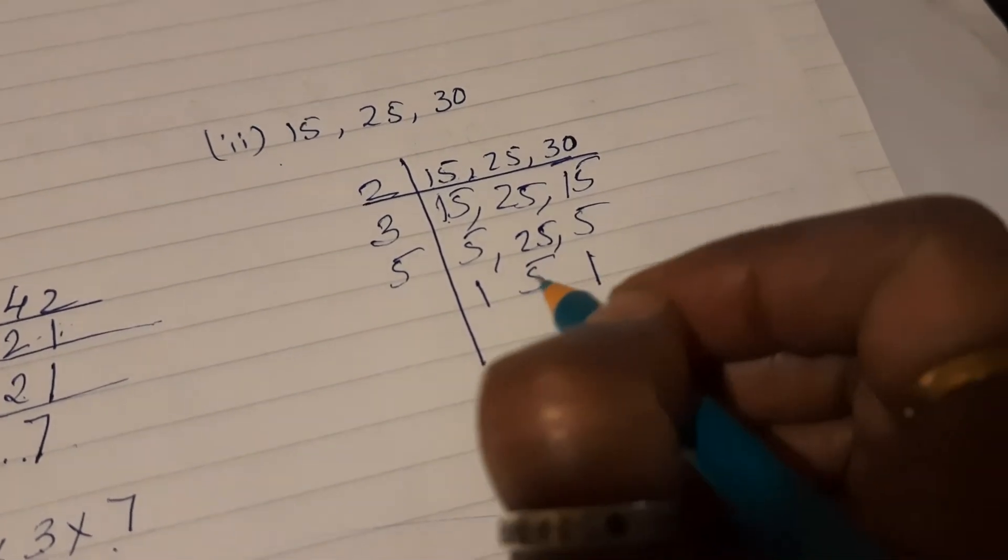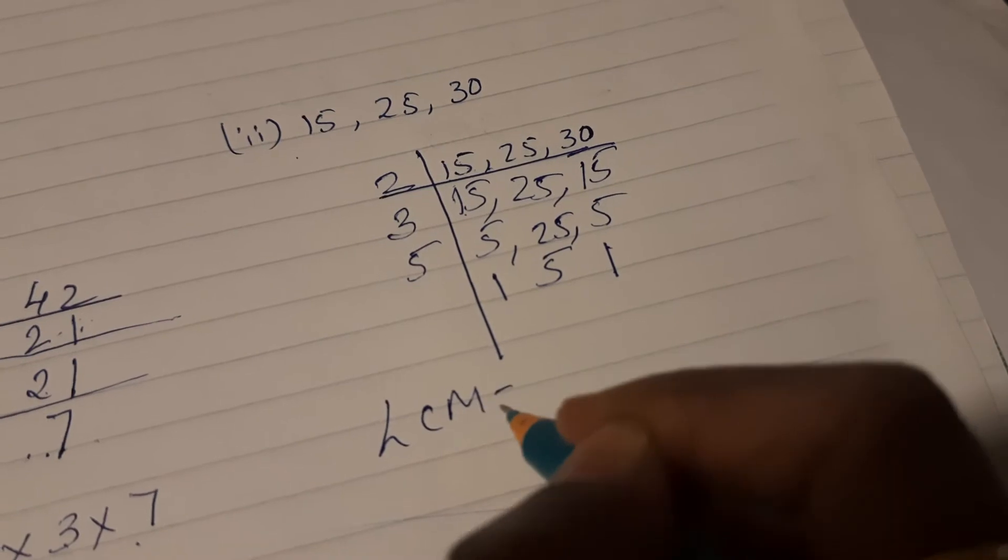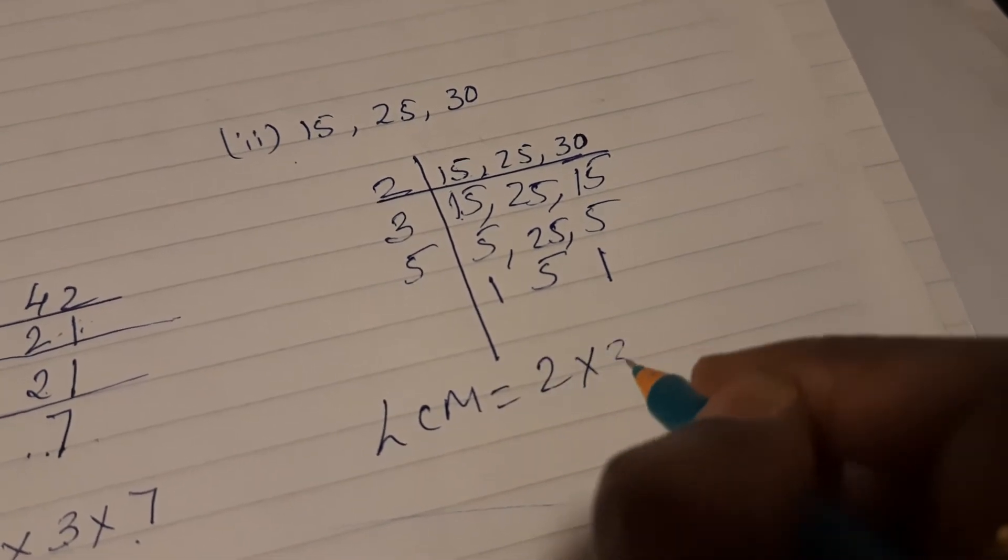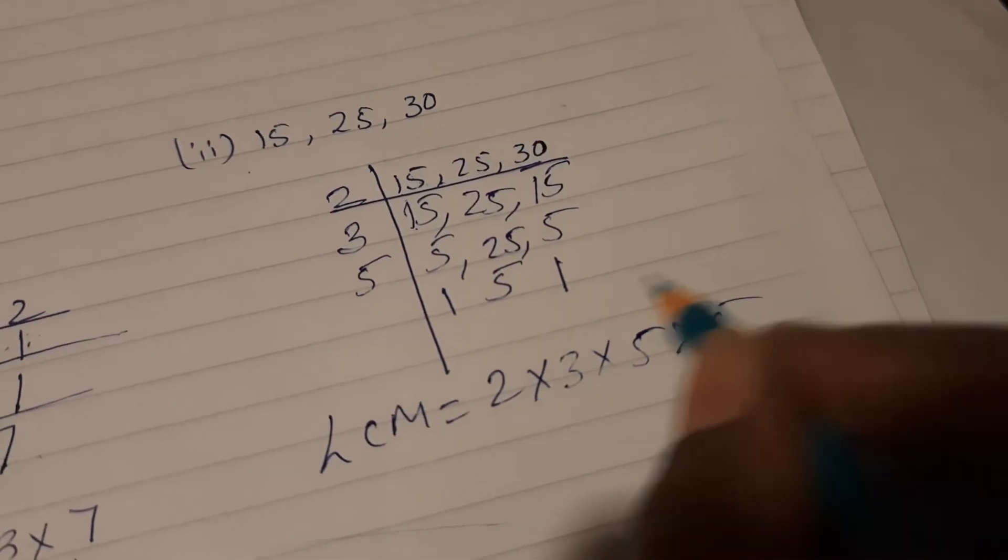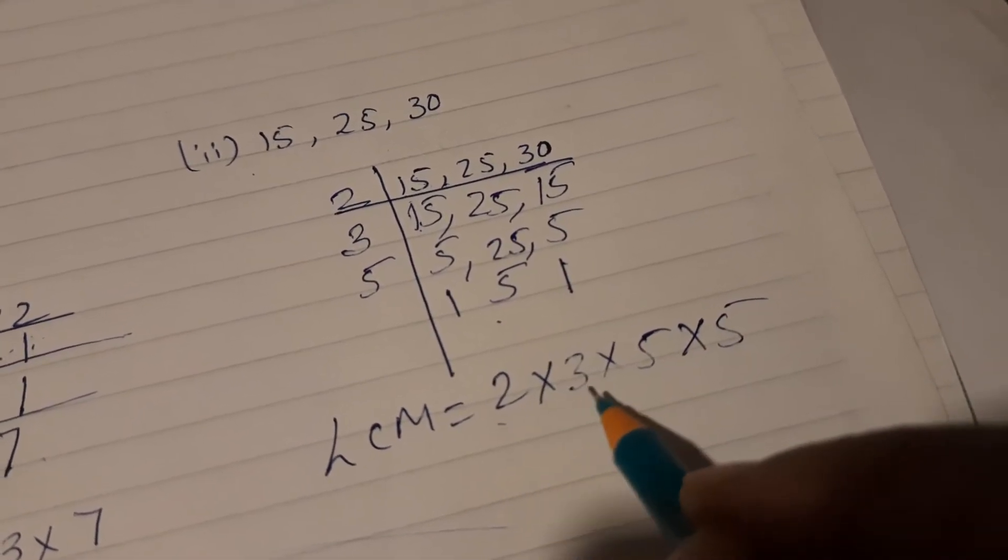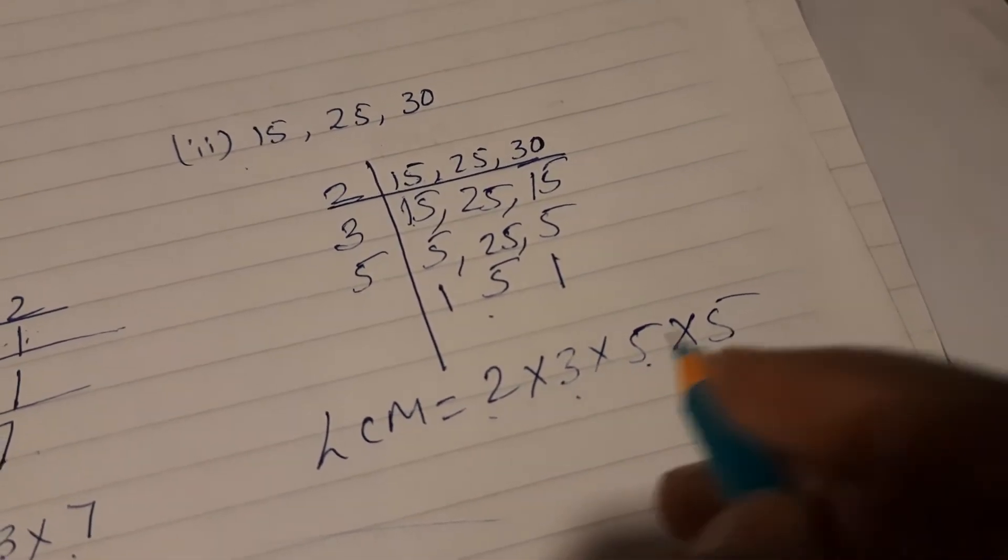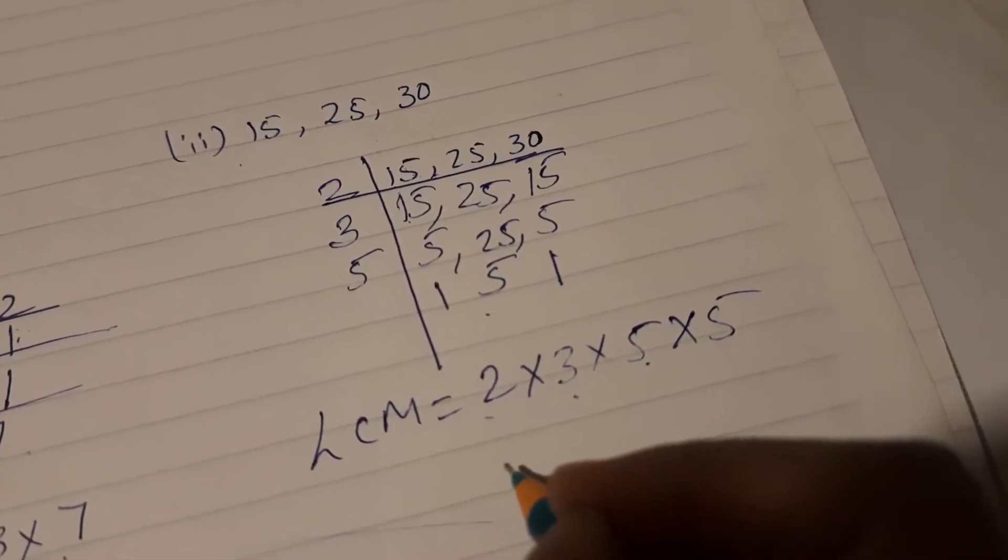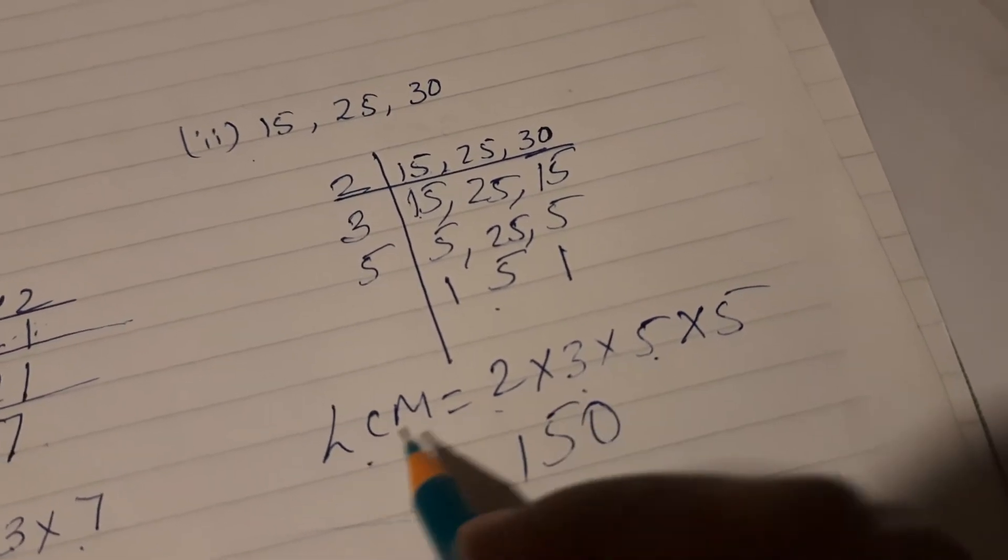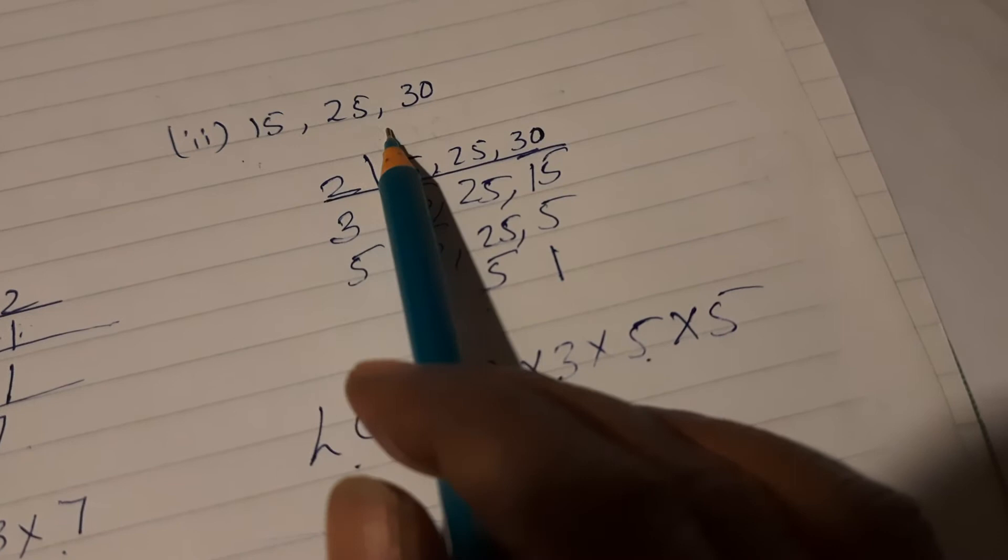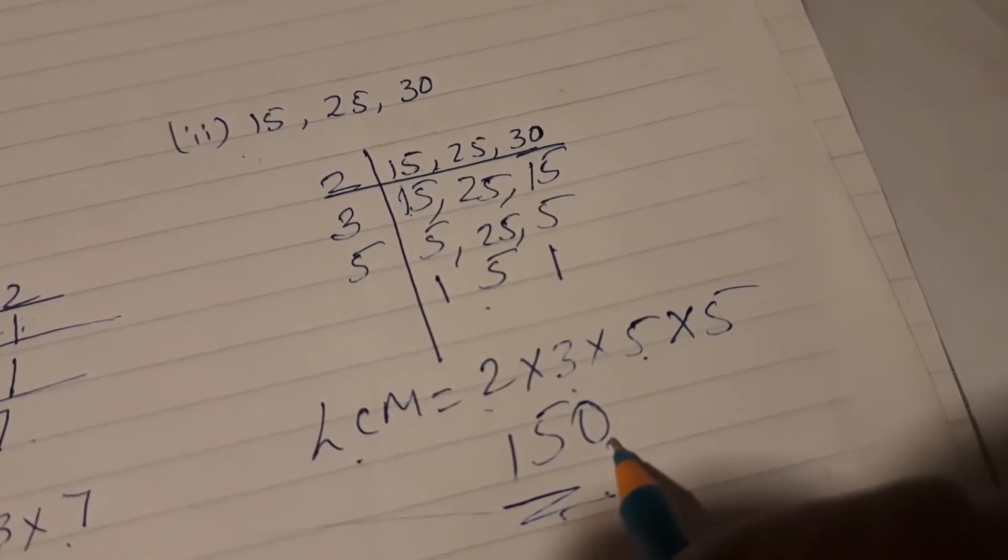So LCM will be 2 into 3 into 5 into 5 into 5, because only 5 is left. So 2 threes are 6, 6 fives are 30, 30 into 5, 150. So LCM of 15, 25, and 30 is 150, children.